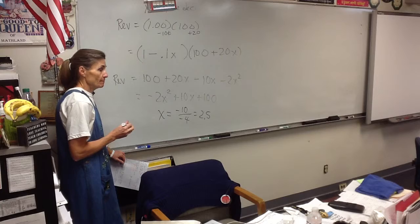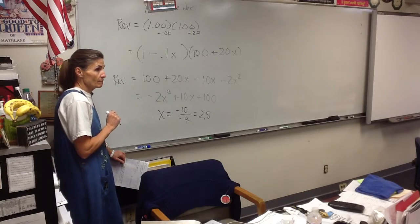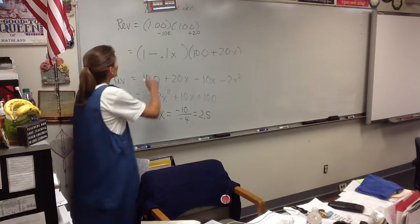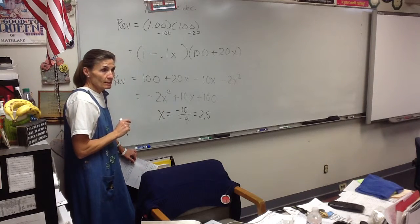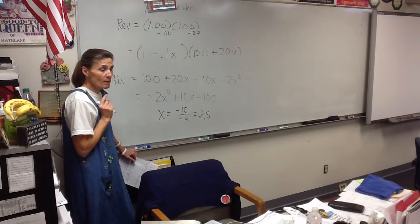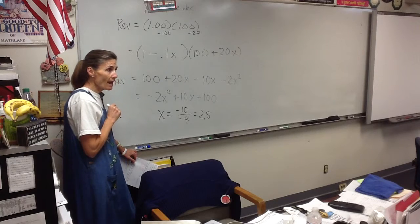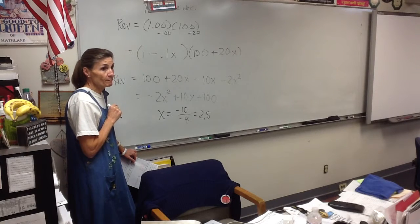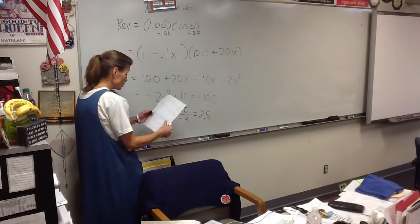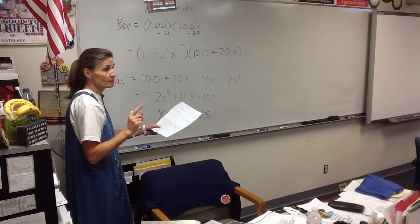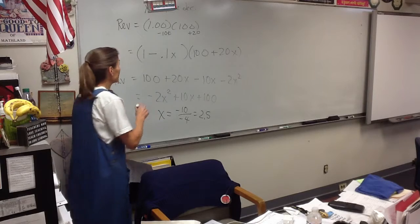So the vertex will be negative b over 2a, which is negative 10 over negative 4, which is two and a half. Now, what does that mean? Two and a half is not the answer to anything. What is that telling me? I am going to change my price two and a half times. Every time I change my price, it's worth how many cents? Ten. So two and a half of those would be twenty-five. So I am going to lower my price twenty-five cents. So what's my new price? Seventy-five cents.